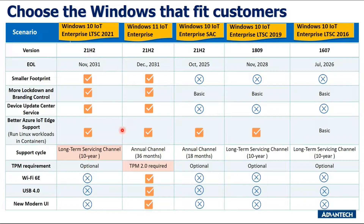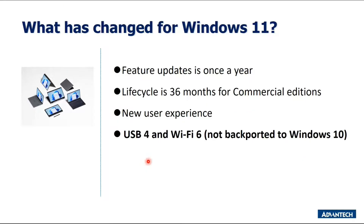As for Windows 11 IoT Enterprise, besides having the features of Windows 10 IoT Enterprise LTSC 2021, it also supports a new modern UI, Wi-Fi 6E and USB 4.0, and requires TPM 2.0 as physical hardware. To summarize what has changed for Windows 11: updates are once a year (previously twice), lifecycle is 36 months for commercial edition, there's a new user experience, and support for USB 4.0 and Wi-Fi 6.